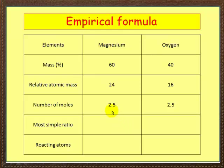Now my simple ratio divided by the smallest - well they're both 2.5, so it's 2.5 over 2.5, which equals 1. So we now know again that 1 magnesium reacts with 1 oxygen, therefore the empirical formula is MgO. Got it?